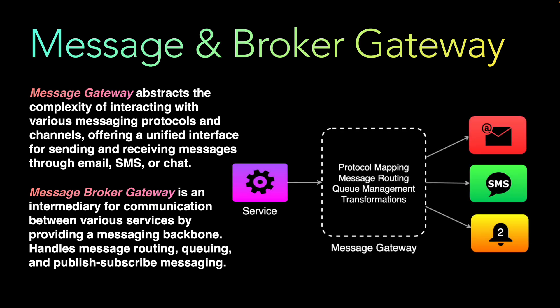Some primary functionalities include protocol mapping, which handles translation between different messaging protocols, allowing the message source to use a standardized interface while abstracting specific messaging technology details. Message routing determines the appropriate destination for each message and directs it to the intended recipient or channel. Queue management ensures reliable and asynchronous message delivery, which is important since messaging and notification systems are generally implemented asynchronously.